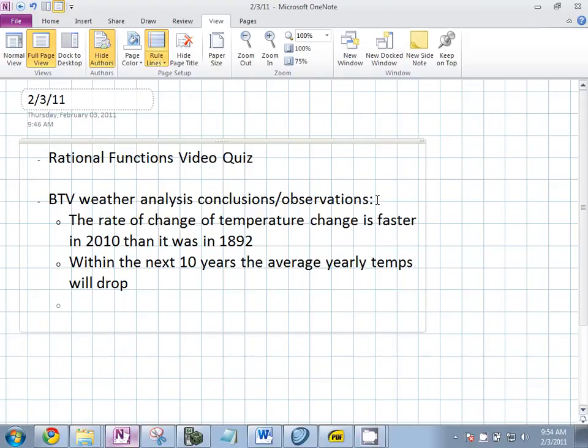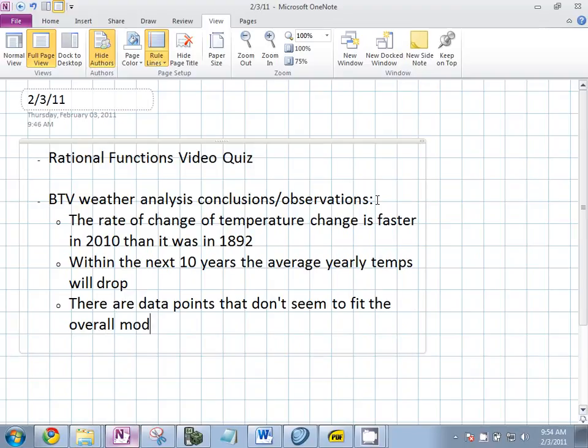Victor, what do you think? I saw that it's too hard for the graph to reach points that are far away from the graph. There are outliers, you mean? There are data points that don't seem to fit the overall model too well. What are those called? Outliers.